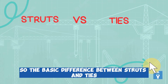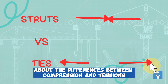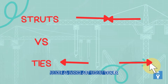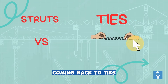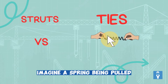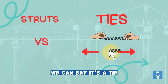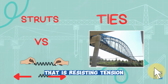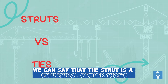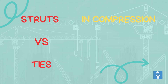The basic difference between struts and ties is the direction of force. Coming back to ties, imagine a spring being pulled — the spring resists that tension, and in that case we say it's a tie. Another example is a truss bridge element resisting tension. In a nutshell, a strut is a structural member in compression, while a tie is a structural member in tension.